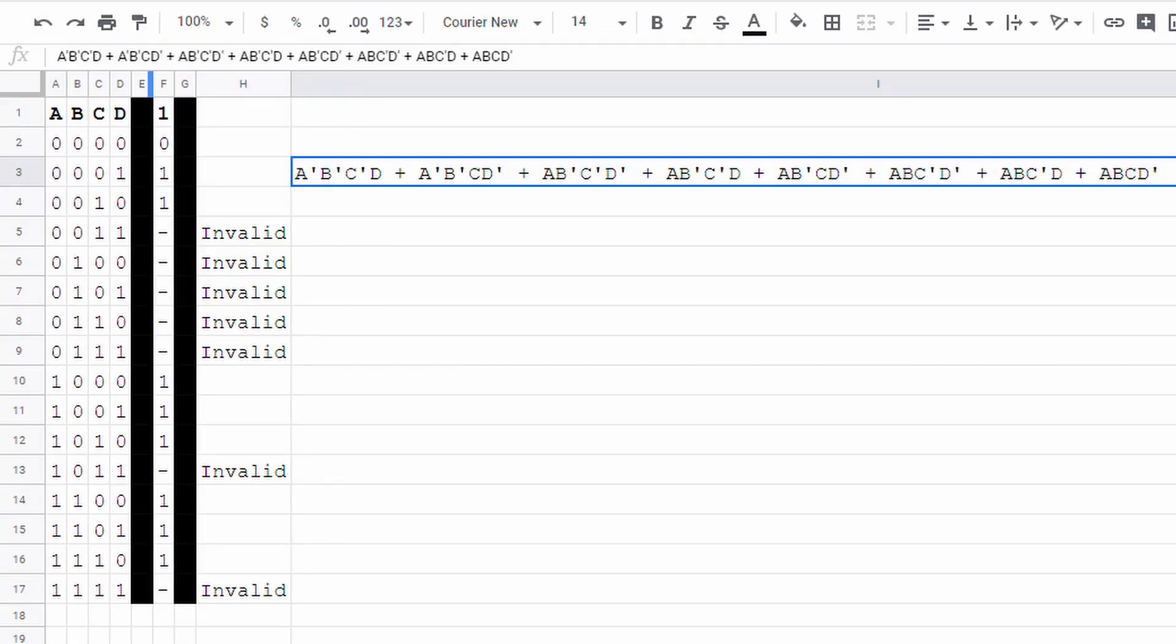We'll write a plus in between each combination, because we're saying when this or this condition is met, the output should be 1. Here are all the combinations laid out.